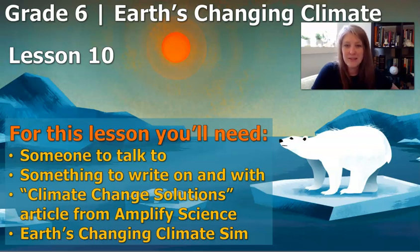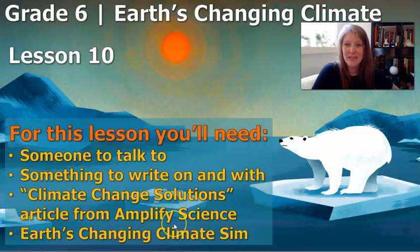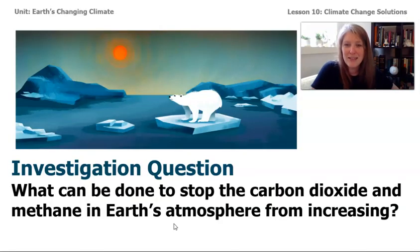For this lesson to be successful, if you have someone to talk to and somewhere to write down your ideas, that will help. We're going to be looking at the Earth's Changing Climate Sim and reading an article called Climate Change Solutions, which we started in lesson 9 — we're just going to finish it up. The investigation question we're trying to answer is: what can be done to stop the carbon dioxide and methane in Earth's atmosphere from increasing?